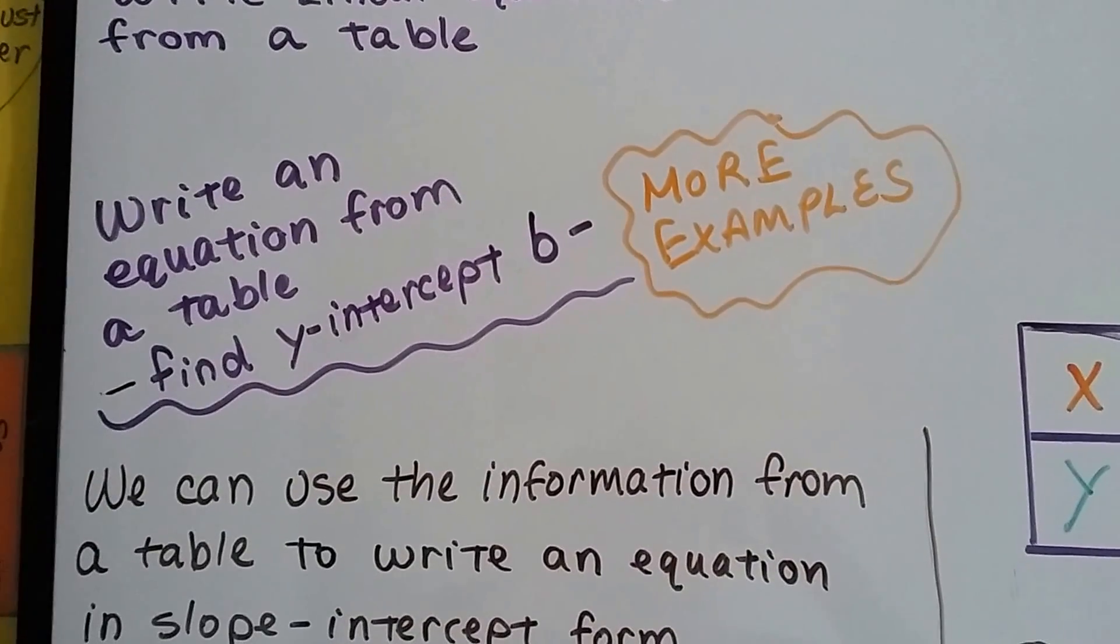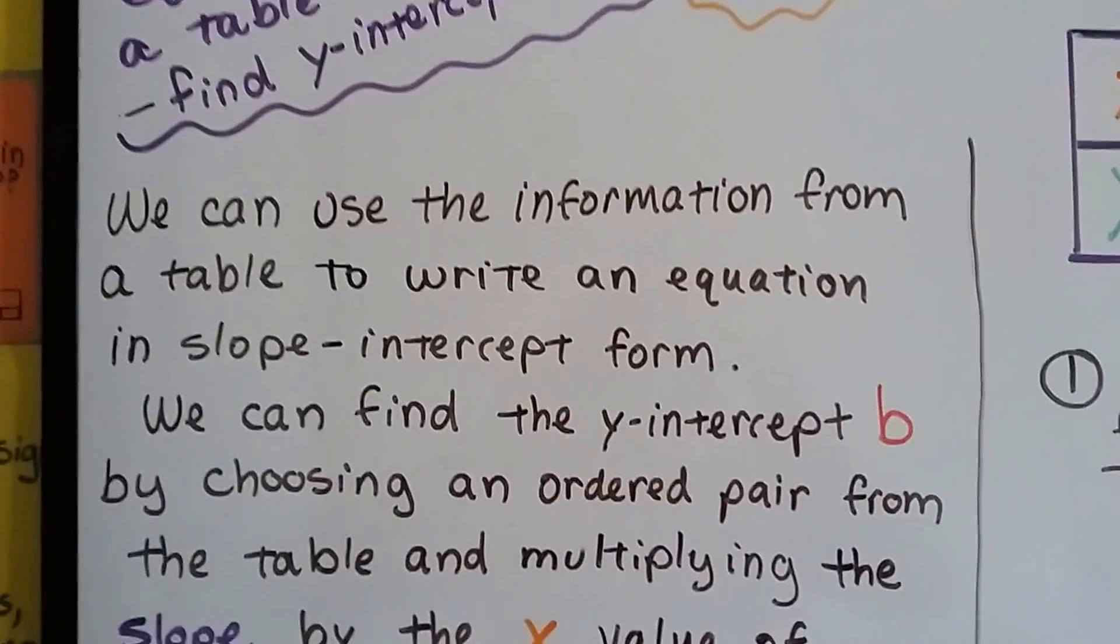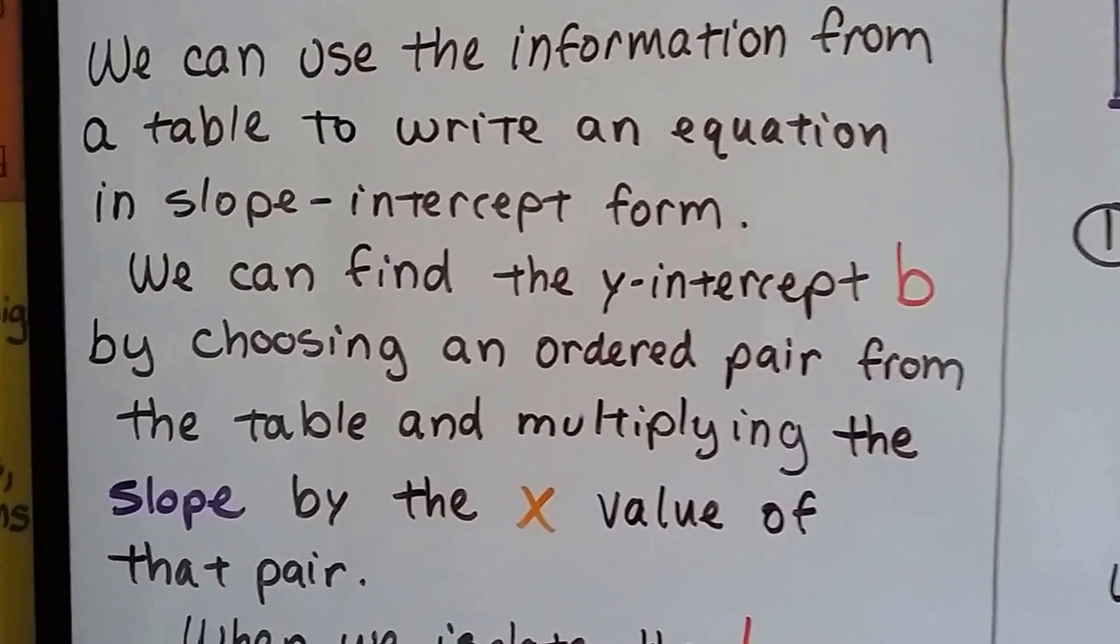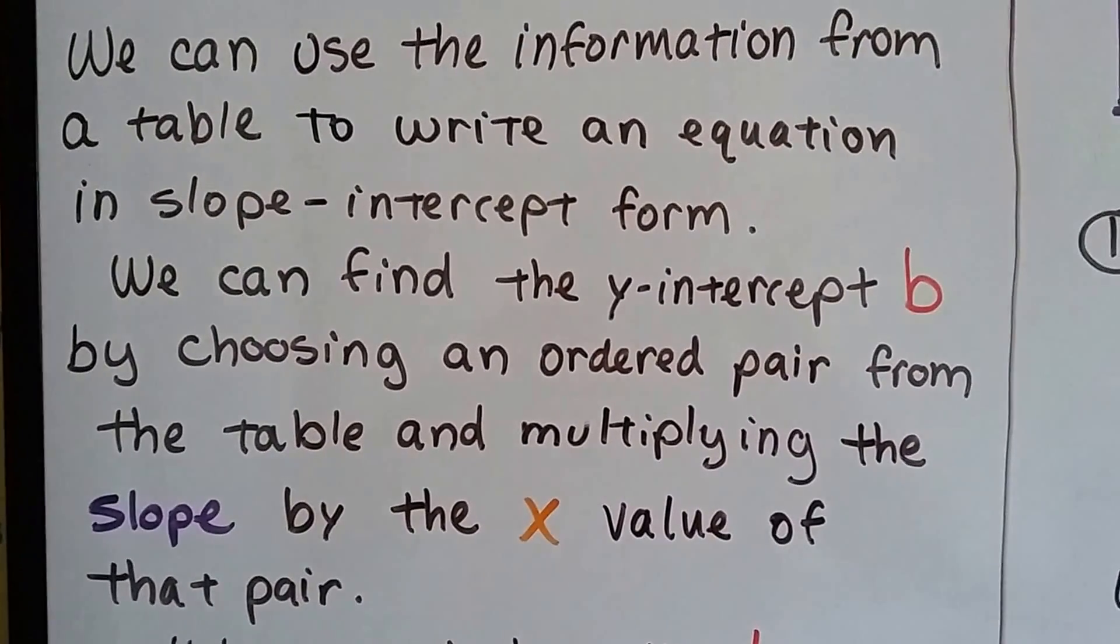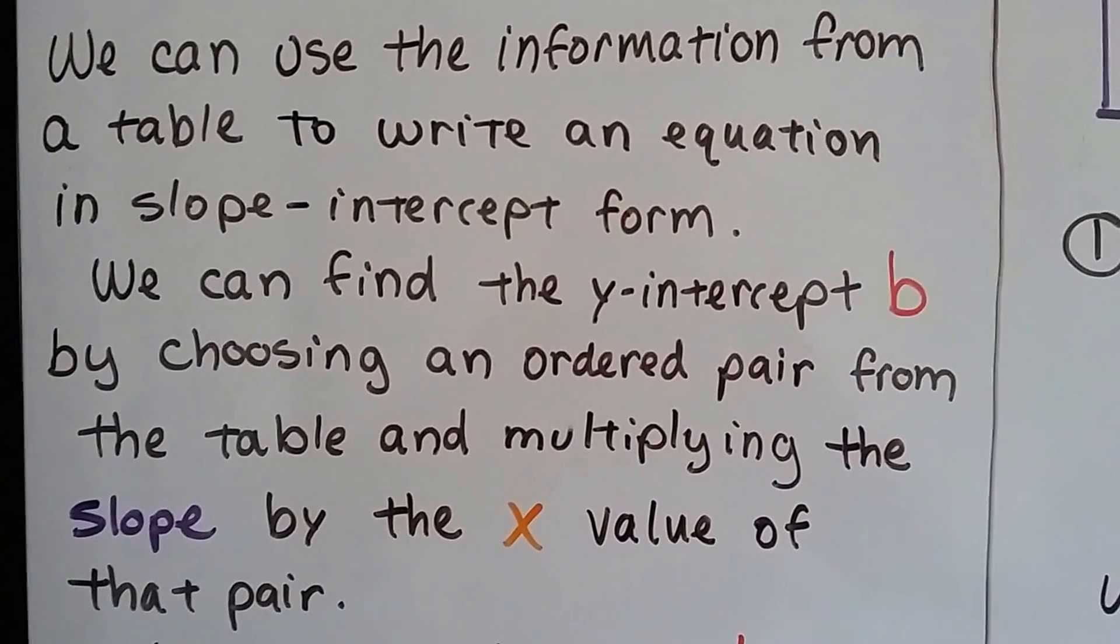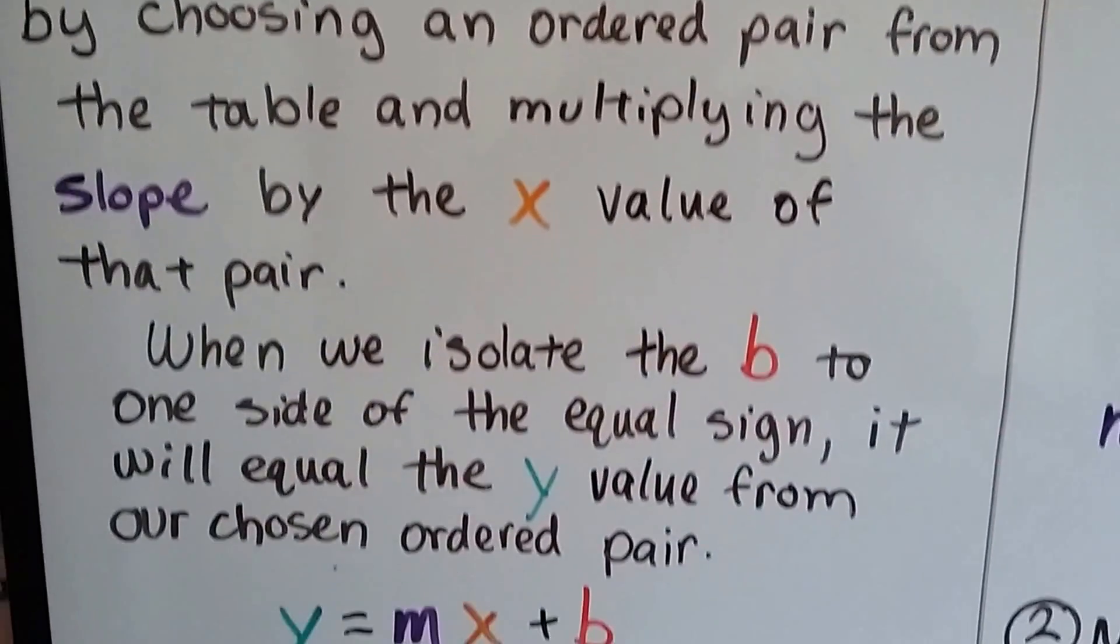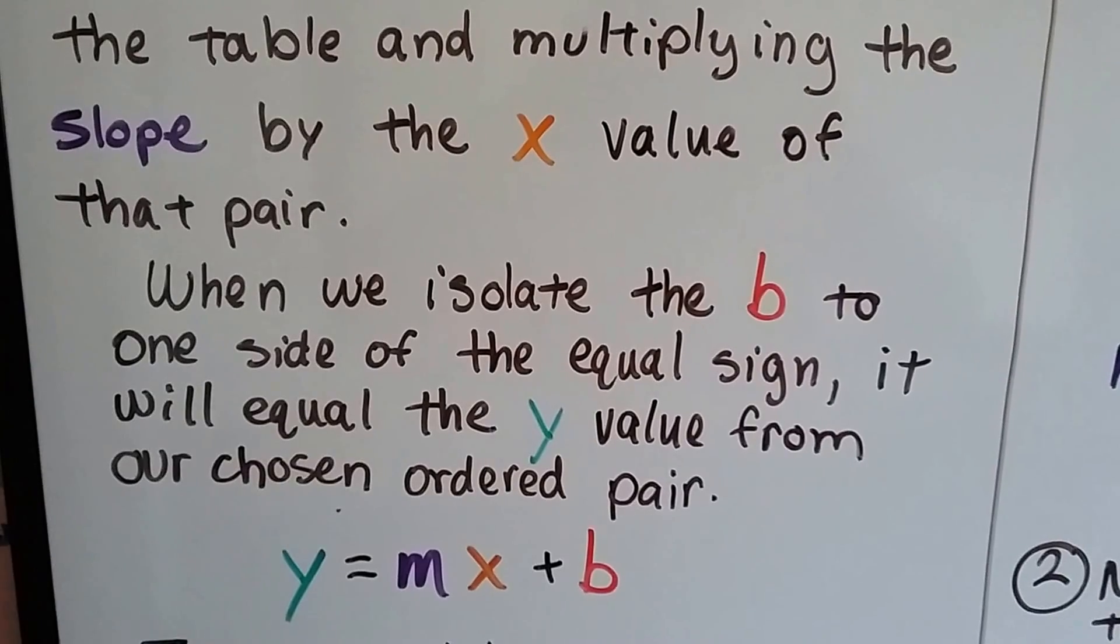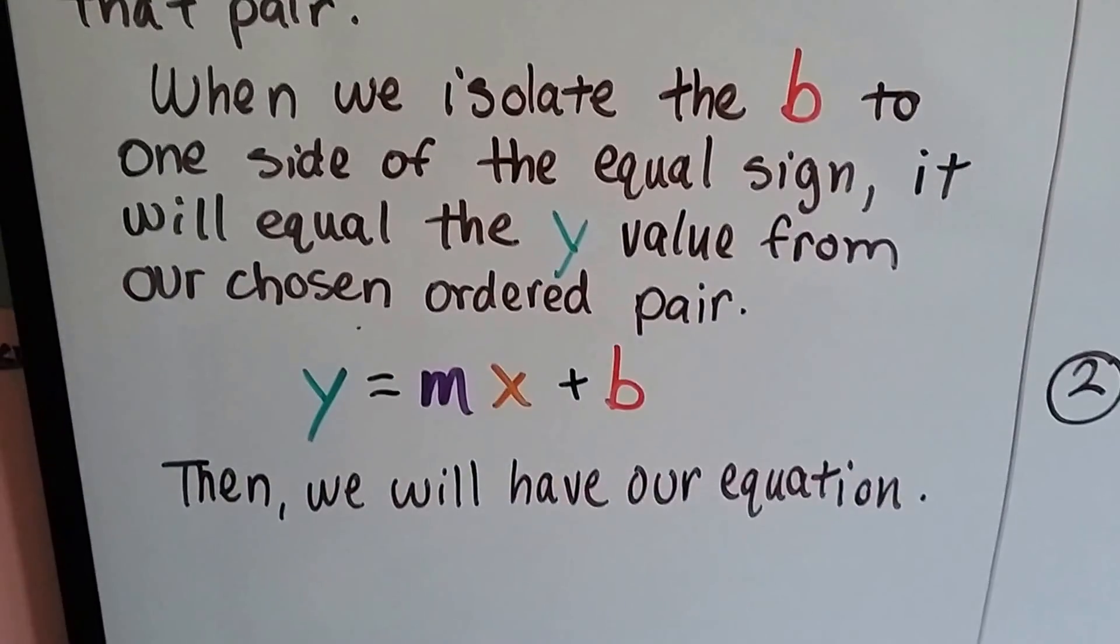So this is a continuation of 5.2b, and it's just more examples for those of you who need a little extra help. We can use the information from a table to write an equation in slope-intercept form. And we can find the y-intercept b by choosing an ordered pair from the table and multiplying the slope by the x-value of that pair. When we isolate the b to one side of the equal sign, it will equal the y-value from our chosen ordered pair. And we'll have our equation.